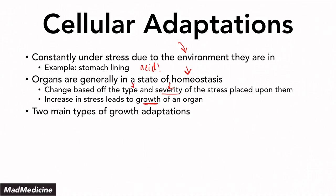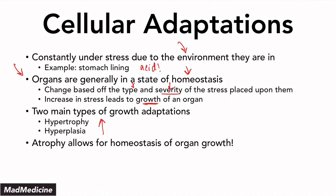There are two main types of growth adaptations: hypertrophy and hyperplasia. In both of these types, the growth of an organ is occurring. Now, organs are generally in a state of homeostasis — so how can they be in homeostasis if they're growing? They have to go back down to their normal size, and that is what atrophy does. Atrophy allows for homeostasis of an organ by reducing its size and number of cells. If the stress goes away, atrophy will occur and the organ will return to its normal state.